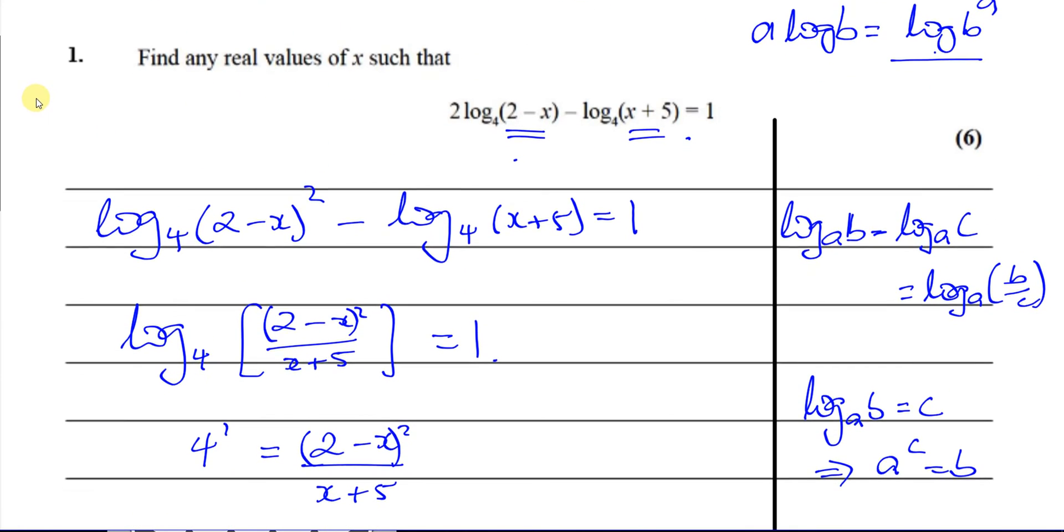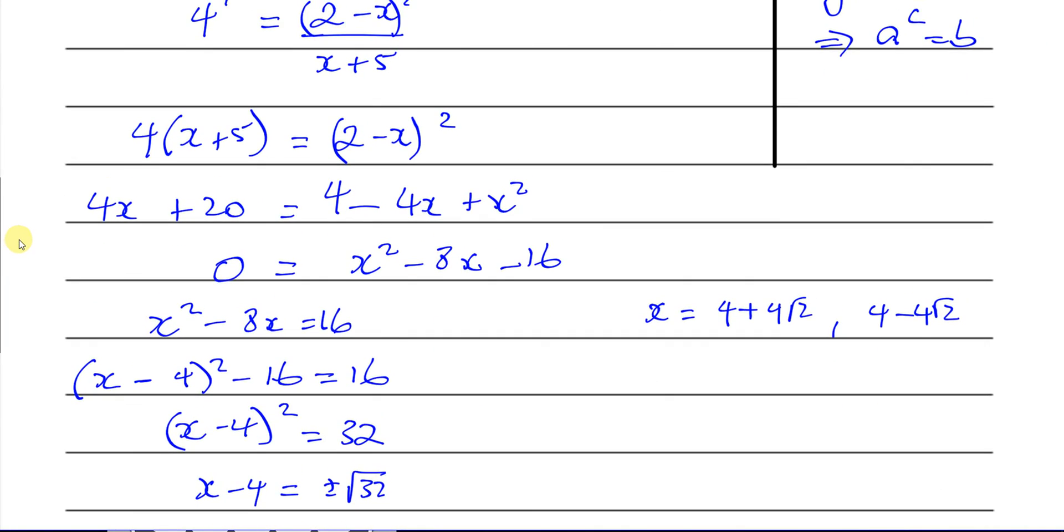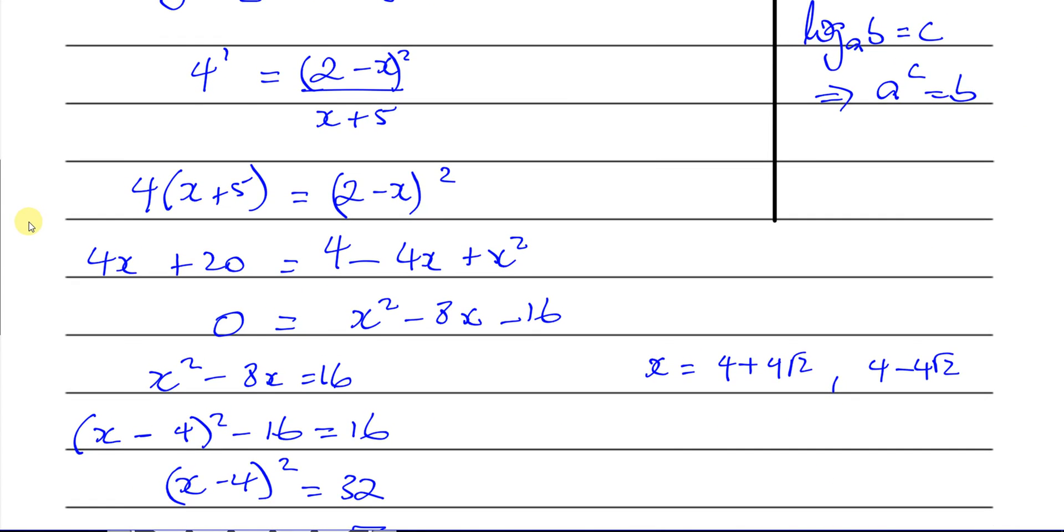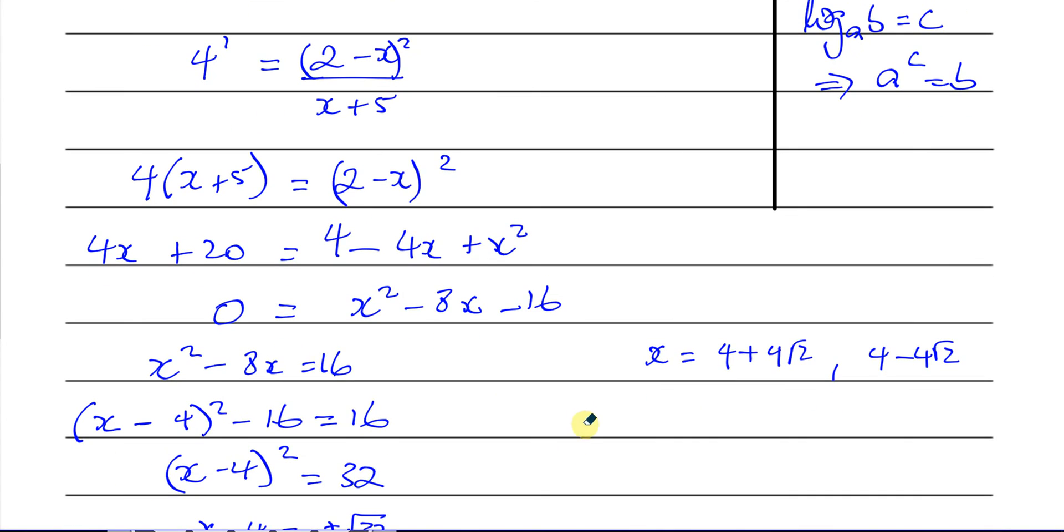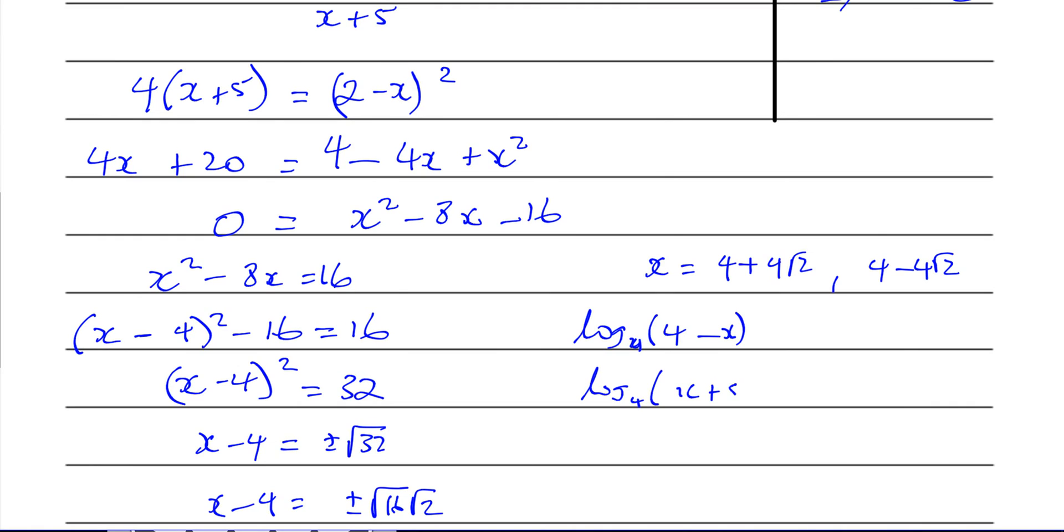Those are the values we found when we solved the equation, but we have to say are they valid answers. So we're going to check to see if, let's look at log to the base 4 of (2 - x) and log to the base 4 of (x + 5). Let's try and see what happens, so log to the base 4 of (2 - x) and log to the base 4 of (x + 5).